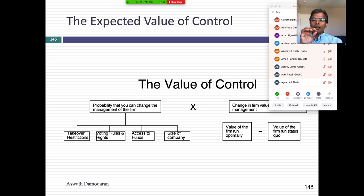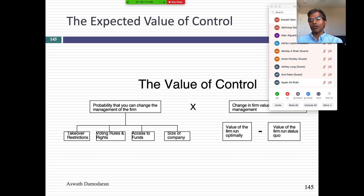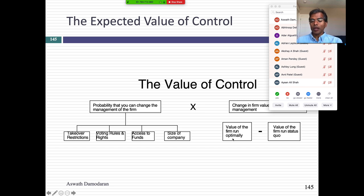The SAP and Blockbuster examples show how different the value of control can be for two companies. At the limit, if a company is already perfectly managed and run, the difference goes to zero — the expected value of control is zero.